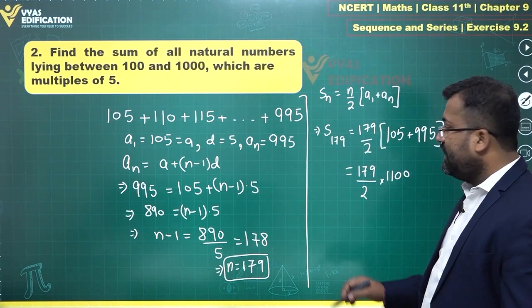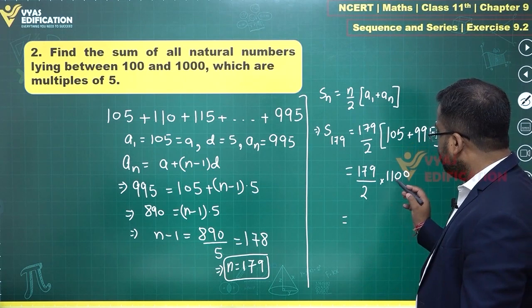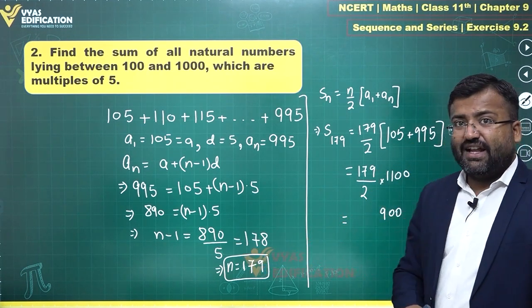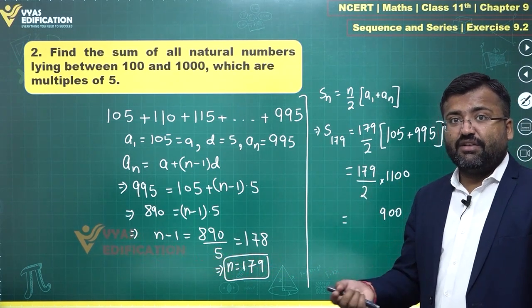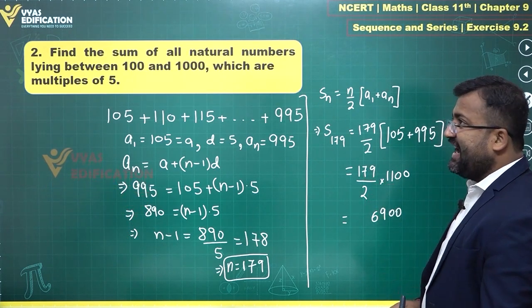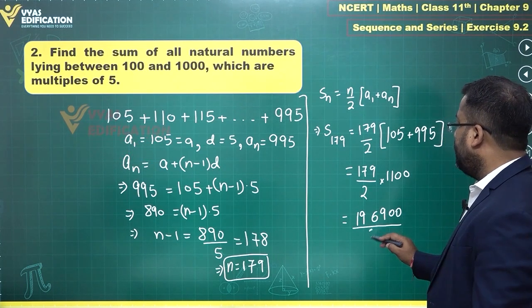995 plus 5 will be 1000 plus 100 is 1100. Let's multiply these 2 and divide by 2 after that. So 11 into 9 will be 2 zeros. 11 into 9 is 99, then you have a 9 carried forward. 11 times 7 is 77, 77 plus 9 will be 86. Then 11 times 1 plus 8 will be 19, upon 2.